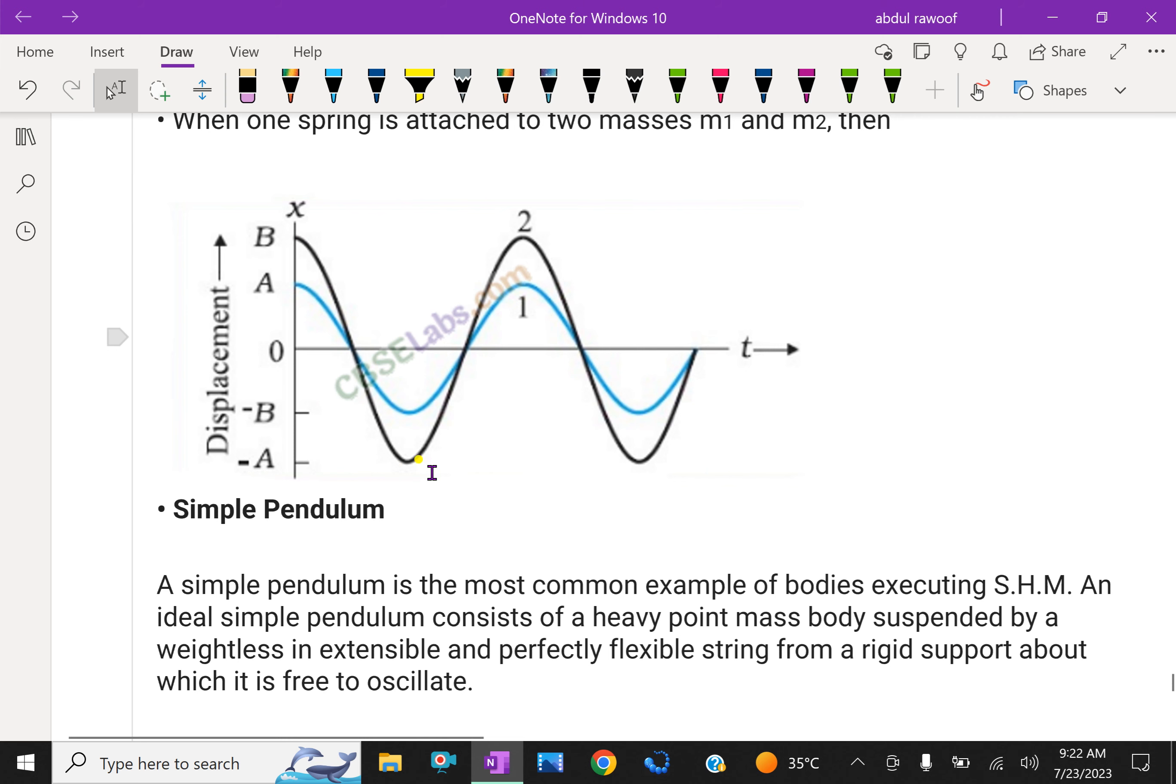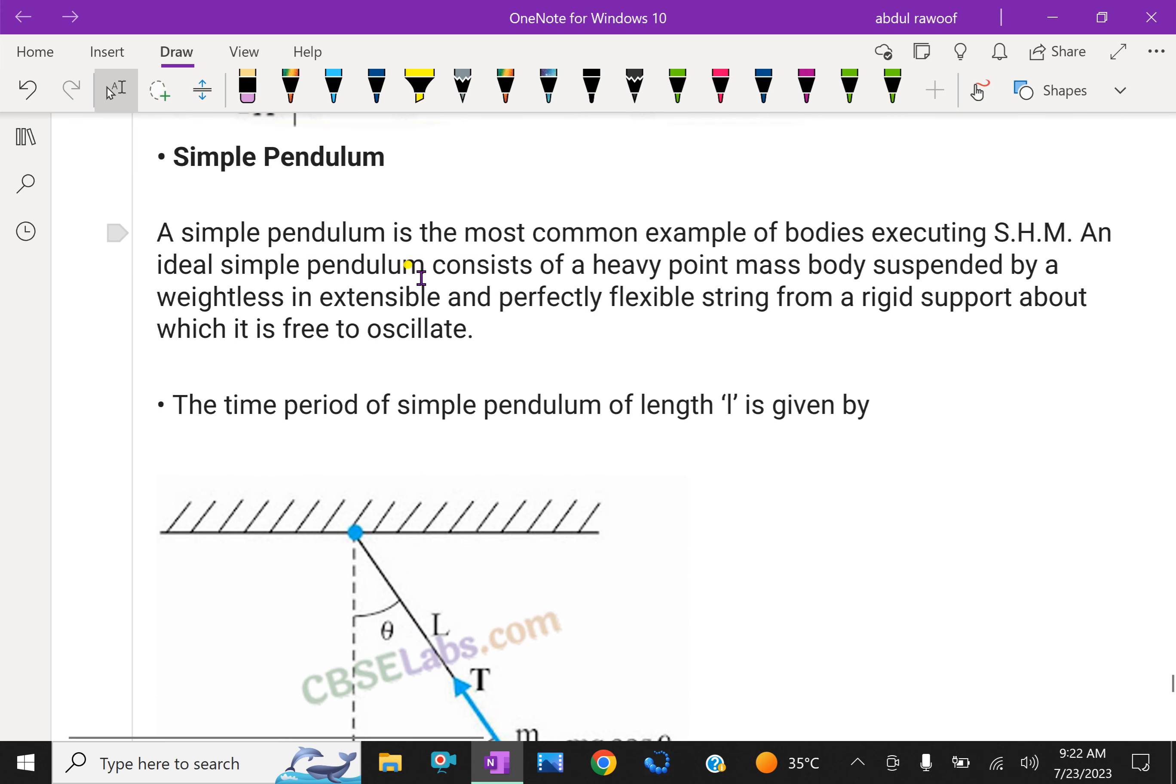Now we will discuss simple pendulum. A simple pendulum is the most common example of bodies executing SHM. We can say a clock pendulum is a good example for simple pendulum, which executes simple harmonic motion. An ideal simple pendulum consists of a heavy point mass body suspended by a weightless, inextensible, and perfectly flexible string from rigid support about which it is free to oscillate.